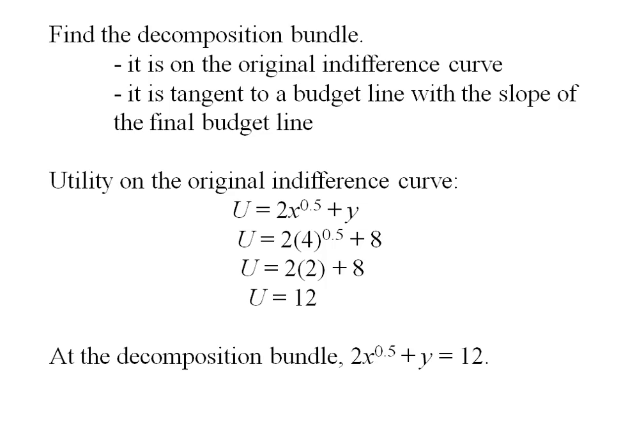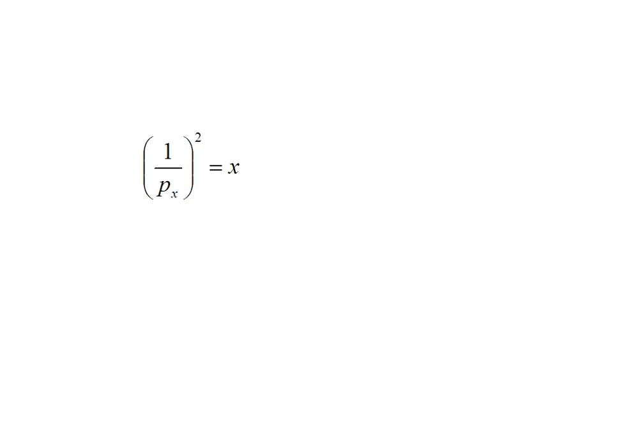So at the decomposition bundle, I need those preferences, 2x to the 0.5 plus y to be equal to 12. I also already have my general expression for x. So when the price is 20 cents, x is 25 units.